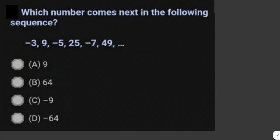Which number comes next in the following sequence: -3, 9, -5, 25, -7, 49? We can notice that the numbers negative three, negative five, negative seven are odd numbers, and 9, 25, and 49 are perfect squares.